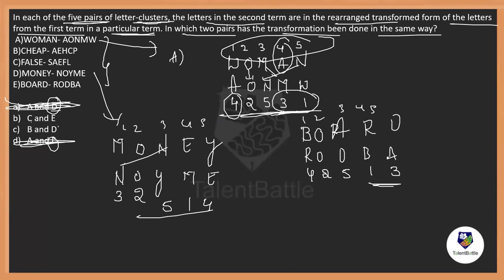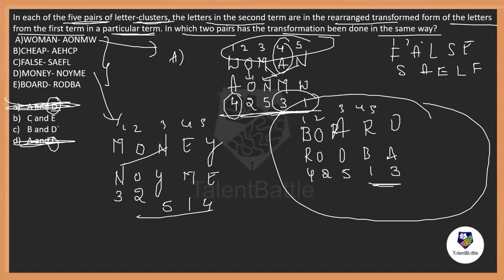Let us check the last. C and E, they are asking. Let's write for C. C is FALSE coded like SAFEL. Same thing. One, two, three, four, five. This is four, two, five, one, three. Exactly correct. Four, two, five, one, three. These both are matching out. So, which matches? So, the answer is option B.